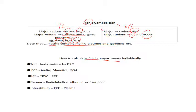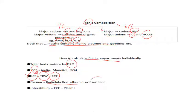To calculate various fluid compartments individually, we use specific chemicals. For total body water, we use deuterium oxide (D2O). For extracellular fluid, we use inulin, mannitol, or sulfate (SO4). For intracellular fluid, subtract extracellular fluid from total body water. For plasma, we use radio-labeled albumin or Evans blue dye — in exams, questions most often ask how to calculate plasma, so remember radio-labeled albumin or Evans blue for plasma, and the subtraction method for interstitium.